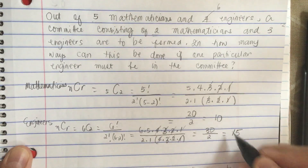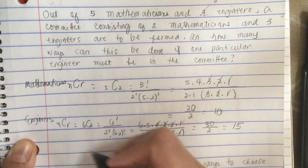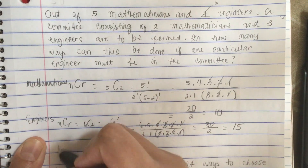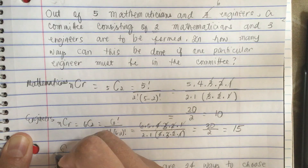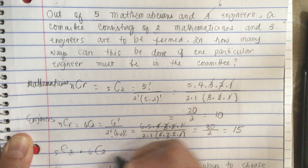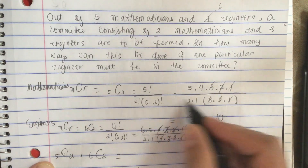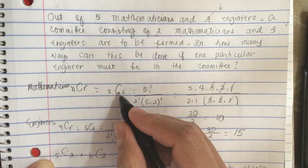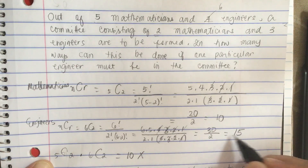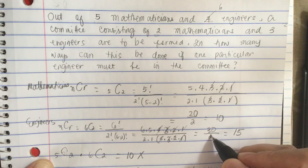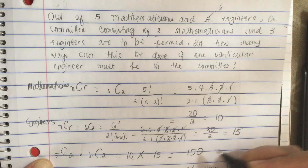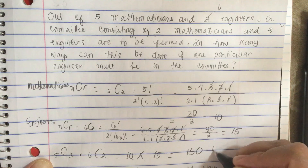So the final answer is C(5,2) times C(6,2), which equals 10 times 15, giving us 150 ways.